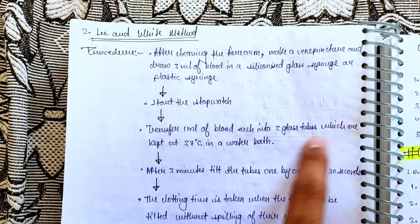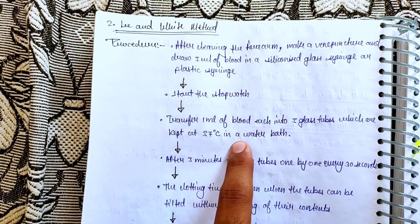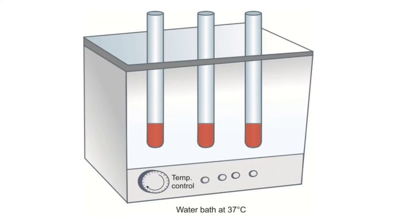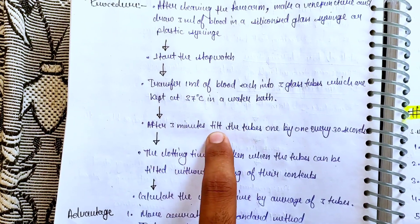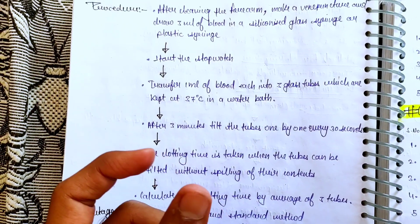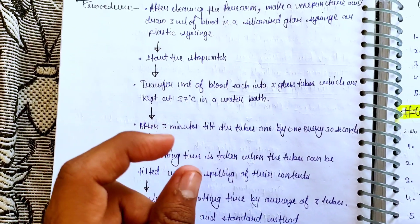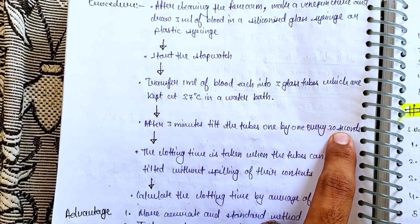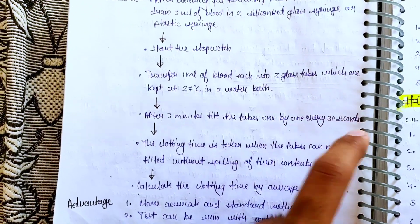Transfer 1 ml of blood into each tube, which are kept at 37 degrees in the water bath. After 3 minutes, begin to tilt the tubes one by one every 30 seconds.